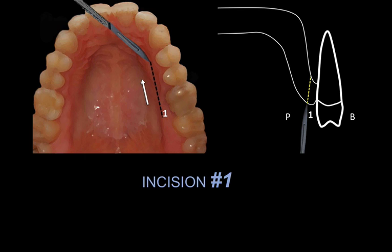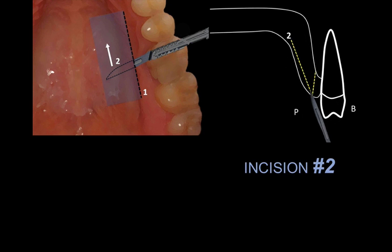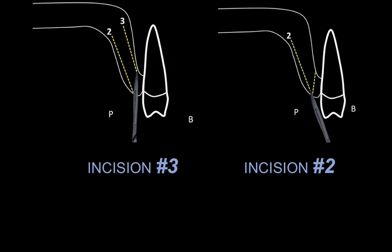Incision number one is a full thickness incision about 2–3 millimeters from the free gingival margin, all the way to bone. The mesiodistal extent depends on the size of the graft you need, but safely you can extend it from the distal aspect of the first molar to the mesial aspect of the first premolar. Incision number two is a superficial incision right underneath the epithelium, same mesiodistal extent, submerging the full length of the number 15 blade. Incision number three is parallel to number two, but this time it's a deeper incision closer to bone, and the entry point is always through incision number one. Keep in mind that all these incisions are made through the initial incision.